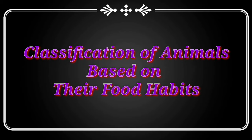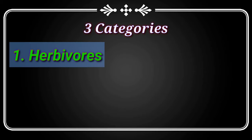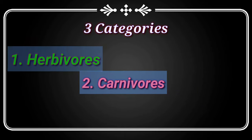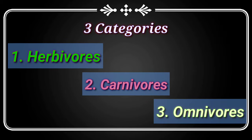Based on their food habits, we can classify these animals into three categories: herbivorous, carnivorous, and omnivorous. Now let's discuss each category in detail.